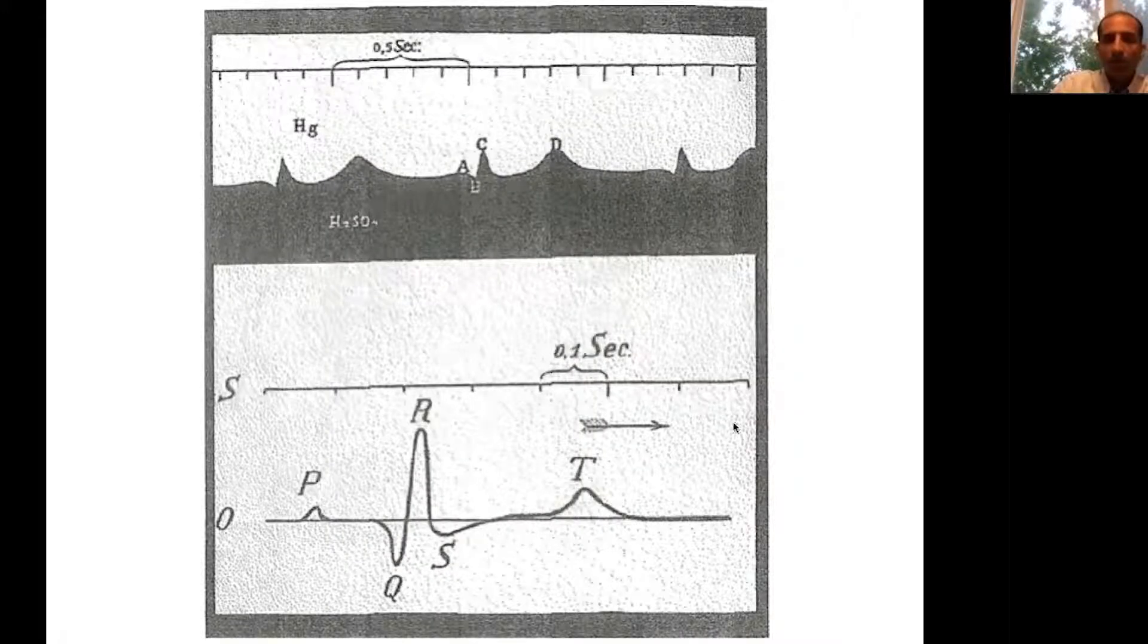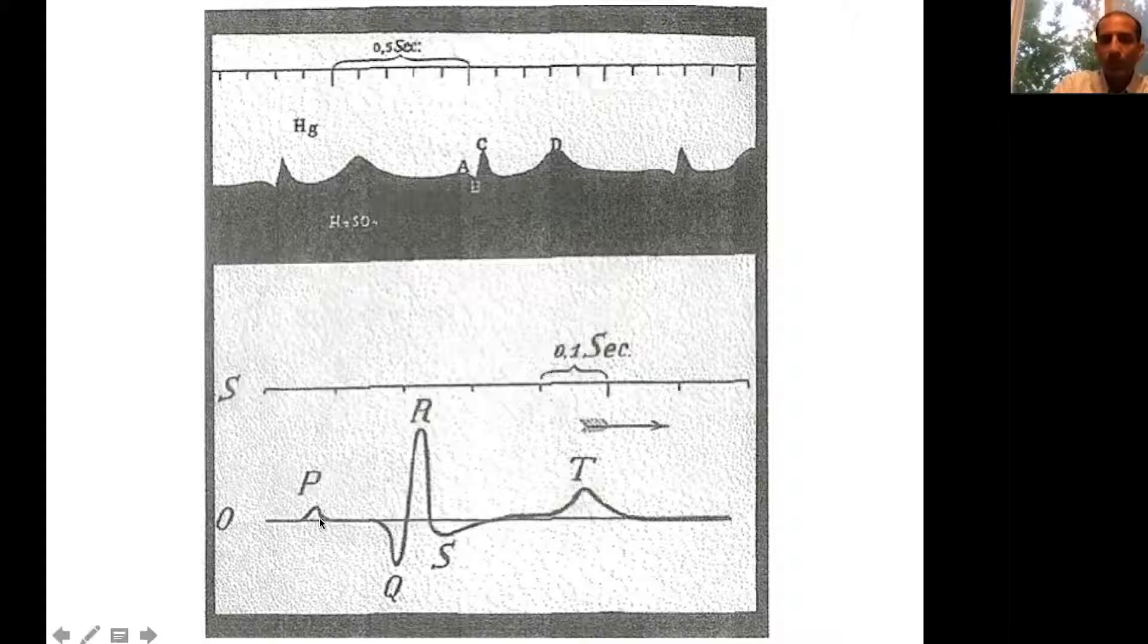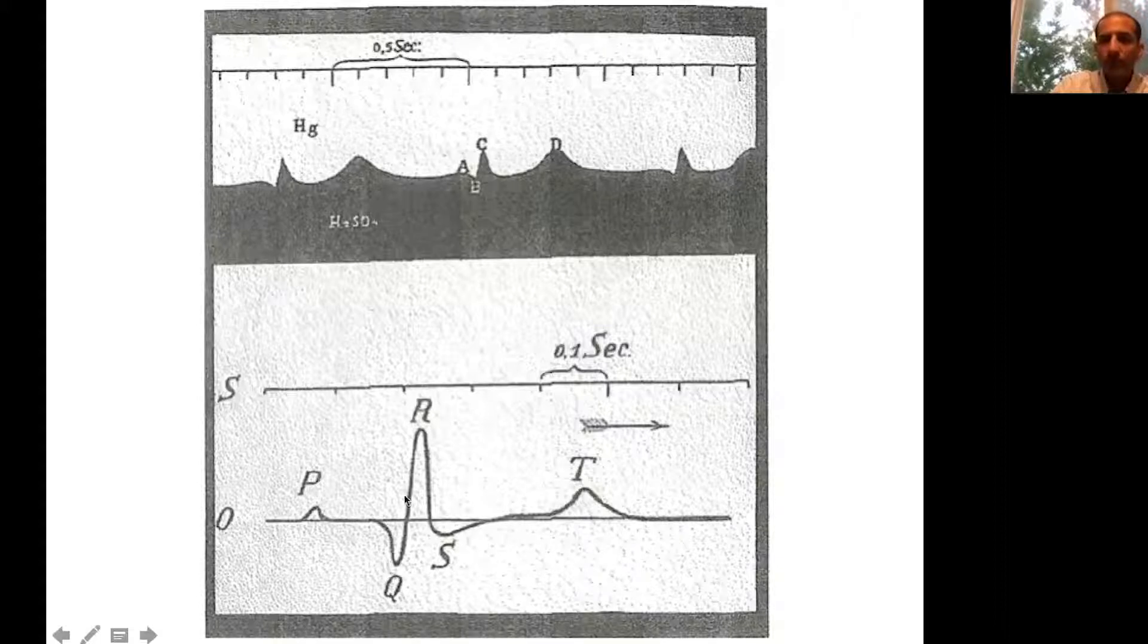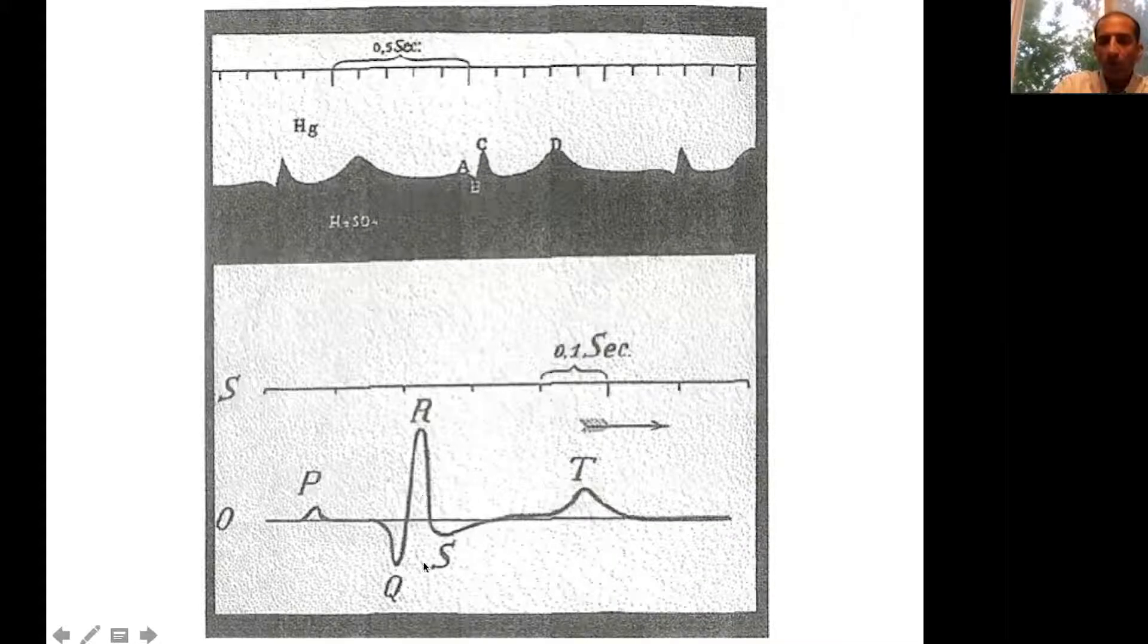This is an example of some of the initial ECG recordings that were done. The ECG consists of the P wave, which represents activation of the upper chambers of the heart or the atrium, followed by conduction through the AV node, and then activation of the lower chamber of the heart, which is the ventricle, which has three parts to it called the QRS.